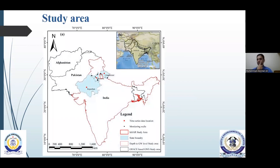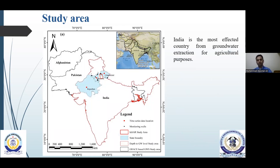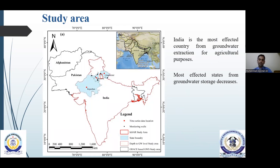Coming toward the study area, we have focused on the South Asian countries to find the overall perspective of how groundwater is depleting within those specific areas. India is the most affected country from groundwater extraction. We can see how much burden there is on India, because the most affected states of groundwater storage are Rajasthan, Haryana, and Uttaranchal. Those three states, along with the upper area of Punjab, are giving the whole food and agriculture perspective for all of India, so they have high groundwater stress within that area, because they have to extract groundwater to utilize it for agriculture purposes.